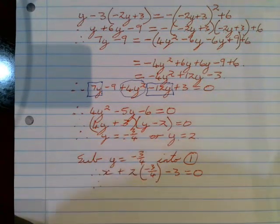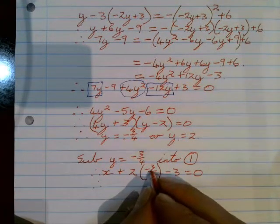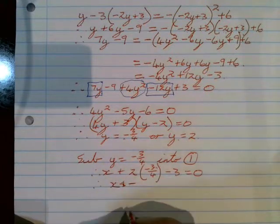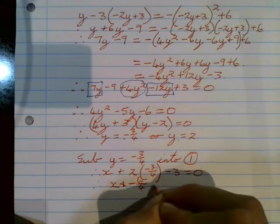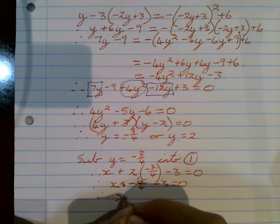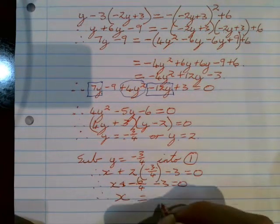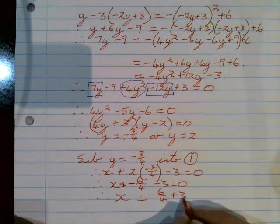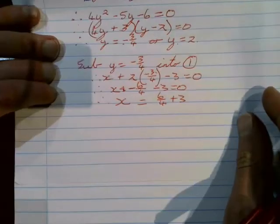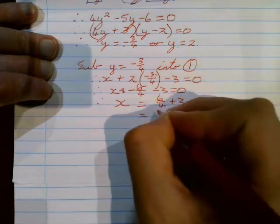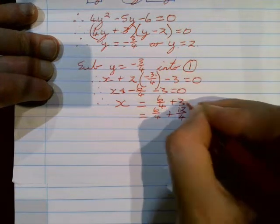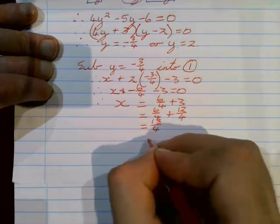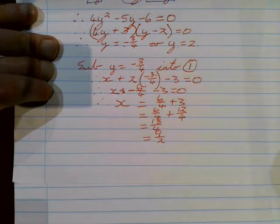We can now solve for x. The 2 gets multiplied by the top of the fraction — positive times negative — giving minus 6 over 4, then minus 3 equals zero. To get x on its own, we take those two things over: x equals 6 over 4 plus 3. Converting 3 into quarters gives 6 over 4 plus 12 over 4, which equals 18 over 4. Simplifying, that's 9 over 2, so our first value for x is 9 over 2.